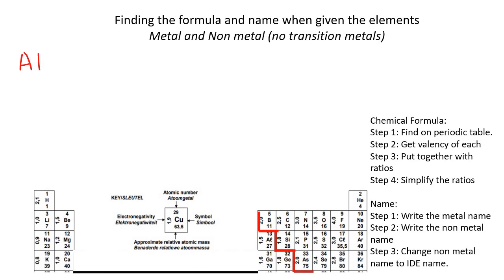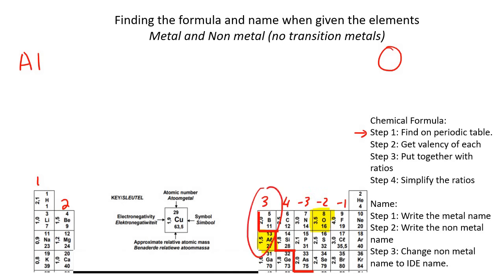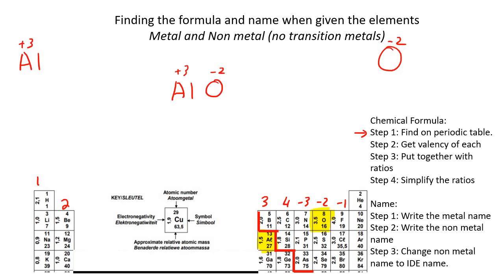In our next example, we're using Al and O. Step one: find them on the periodic table — Al is here, O is here. Step two: get the valency. Al is plus three, and O is minus two. Put them next to each other, then cross the numbers. It becomes Al₂O₃. Step four — simplifying — doesn't apply here, but we will do an example of that in this lesson.